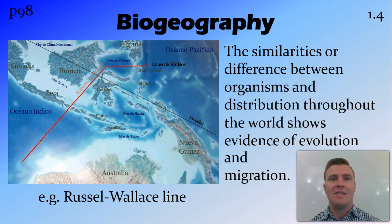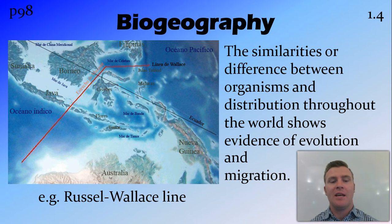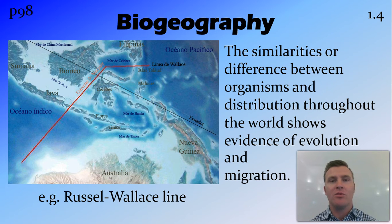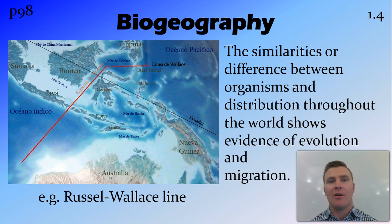Biogeography is the study of living things and their distribution throughout the world, looking at the similarities and differences between where things are found. One important thing to note here is the Russell-Wallace line, which runs between Australia and Southeast Asia. It's a made-up barrier, but it shows the difference between the Southeast Asian animals, which are predominantly placentals as with the rest of the world, and the Australian animals, which are predominantly marsupials. This shows the reproduction in isolation and separated evolution that has occurred between Australia and Southeast Asia.